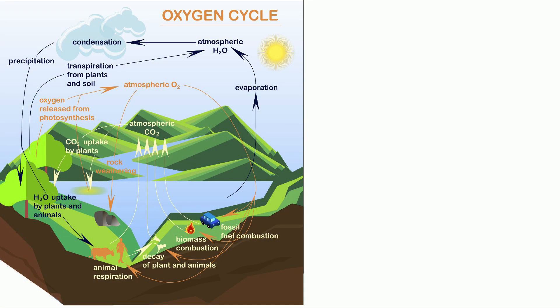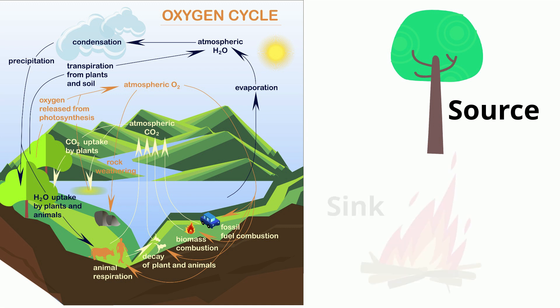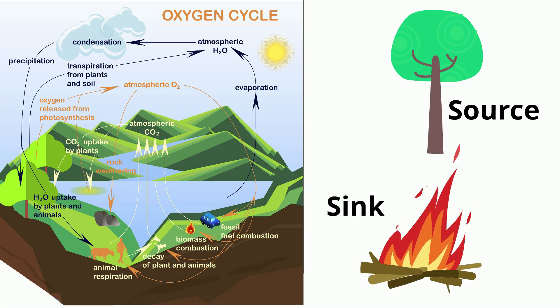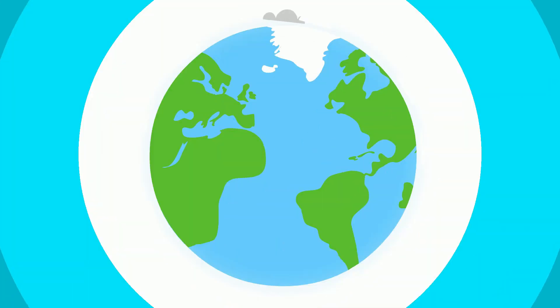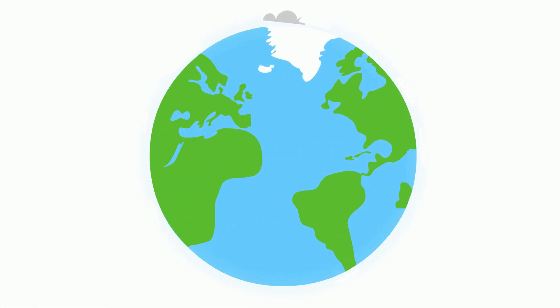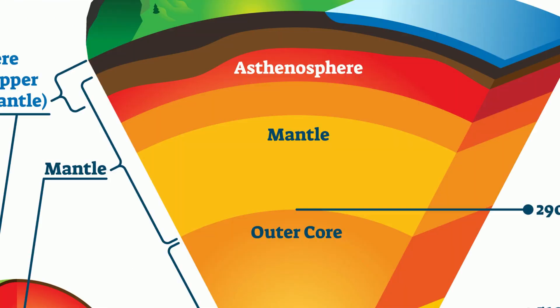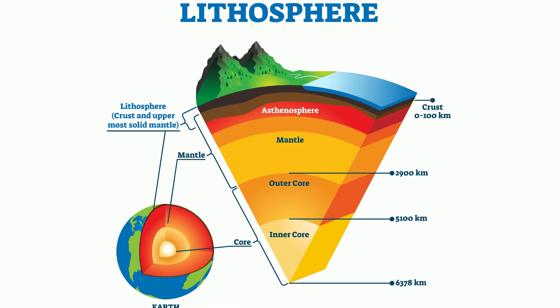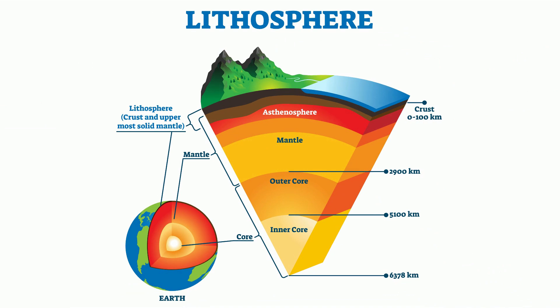Processes within this cycle are considered either a source or a sink, which involves oxygen consumption. But first, where do we find oxygen on Earth? The largest reservoir of the Earth's oxygen is found in the lithosphere. Silicate and oxide minerals of the crust and mantle make up large portions of the lithosphere and contain oxygen.